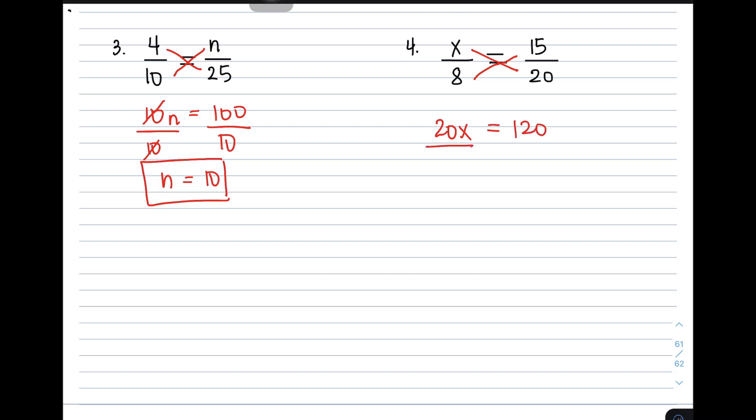So divide both sides by 20. You can divide it, eliminate 20. There you have it. You have the variable x is equal to 6. That is the value of the missing variable x.